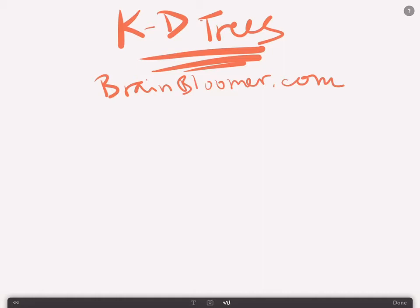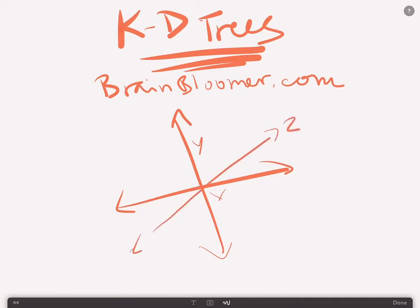KD-trees are a great data structure. Basically, if you have anything that has multi-dimensions, so if you think about something like X, Y, Z, this is only three dimensions, but you have your X-axis, your Y-axis, and kind of like little Z-axis over here, and this is your Z-axis.